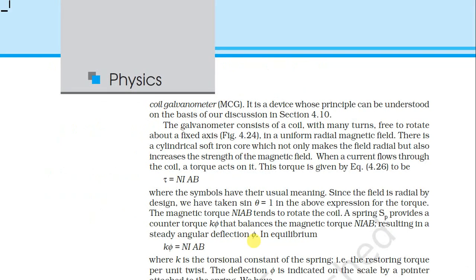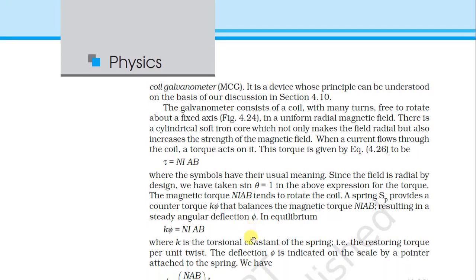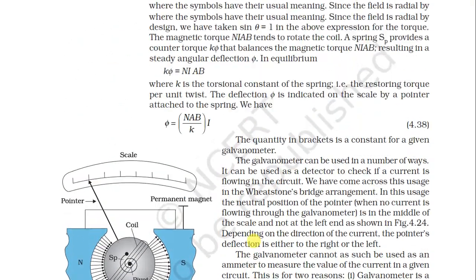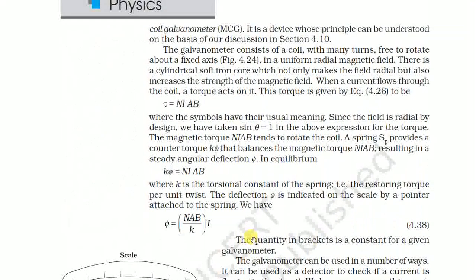The moving coil galvanometer is a device whose principle can be understood on the basis of our discussions in section 4.10. The galvanometer consists of a coil with many turns, free to rotate about a fixed axis in a uniform radial magnetic field. There is a cylindrical soft iron core.